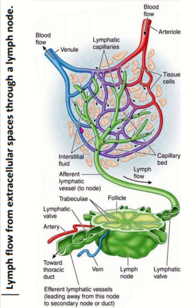The blood capillary operates at high pressure compared to the lymph capillary. Lymph capillaries operate under low pressure, so they can collect and return fluid to the circulatory system. These lymph capillaries come together to form efferent lymph vessels, and this is the cross section of the lymph node. These are all efferent lymph vessels.